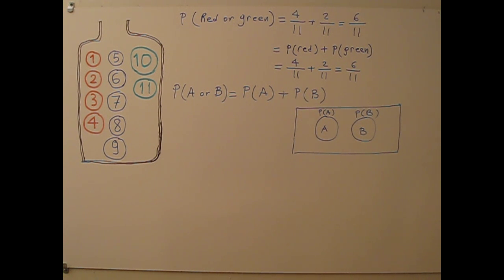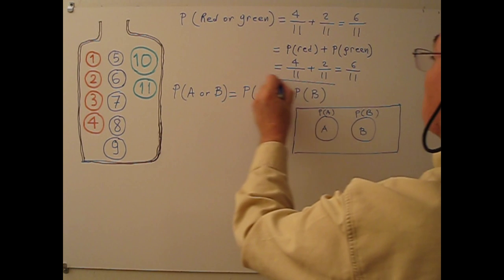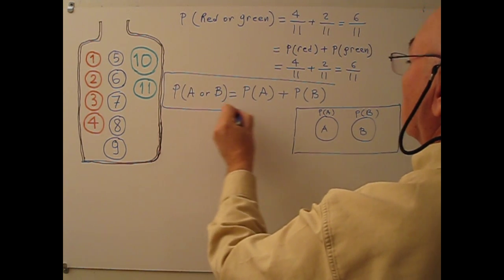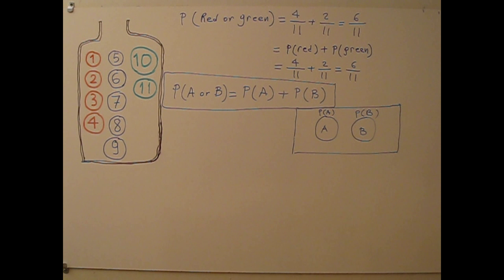As a summary, Mutually Exclusive events: two or more events are Mutually Exclusive if they cannot occur at the same time and they have no common outcomes. This is the formula for the Mutually Exclusive event.